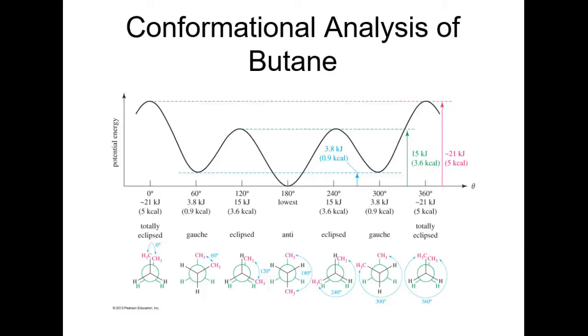Here is the energy profile of these conformations. A little bit different, but similar. Same type of thing. You have your total eclipsed, where the two methyl groups are completely eclipsing each other. Highest energy. Look at that, 21 kilojoules, because eventually we get down to 3.8. So that's a lot.